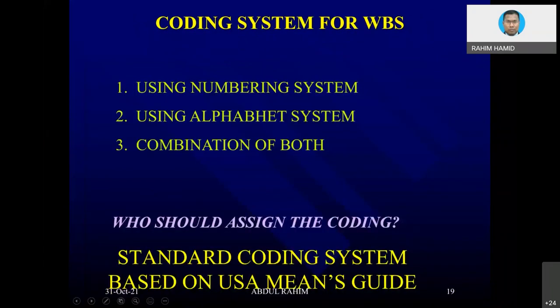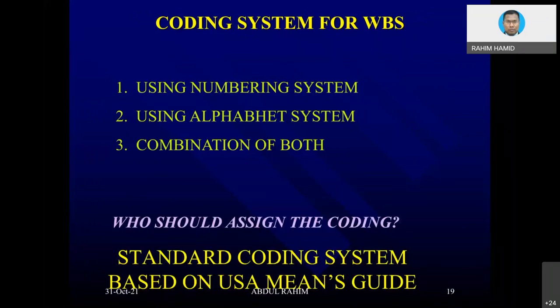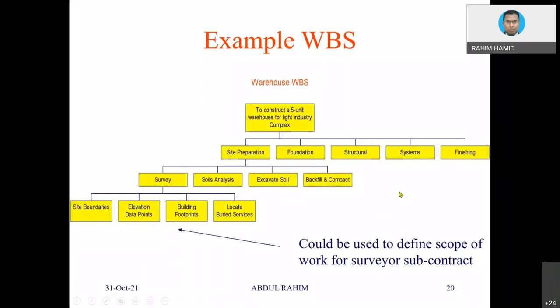The coding system for WBS uses numbering, alphabets, or a combination of both. The US MEANS guide is a book that contains those codes plus productivity rates. In Malaysia, I have not seen any similar book, so when we do scheduling it is difficult because we do not have a single reference guide. For BQ we already have a standard method of measurement, but for scheduling we are yet to see one.